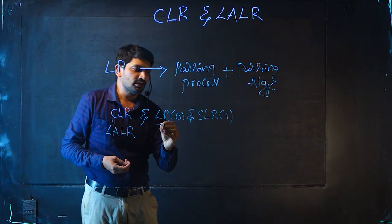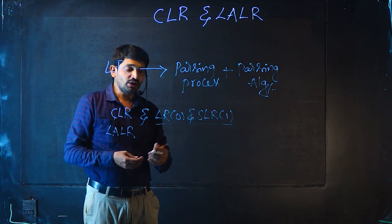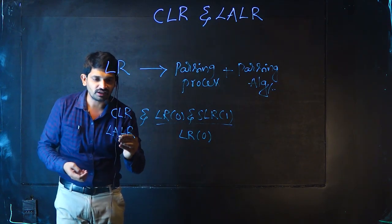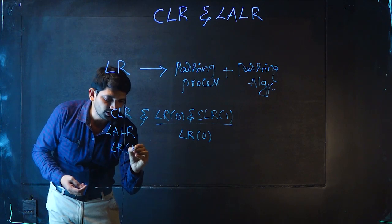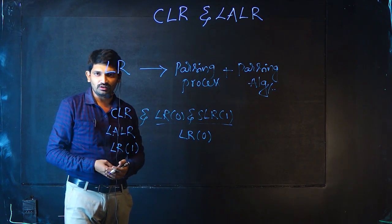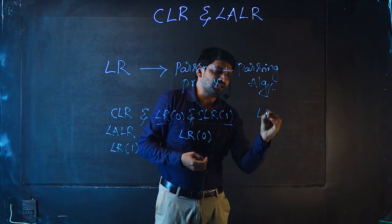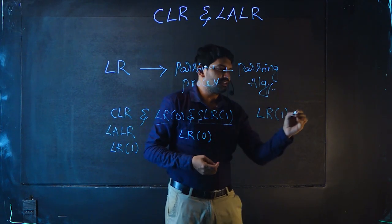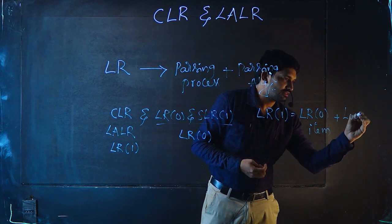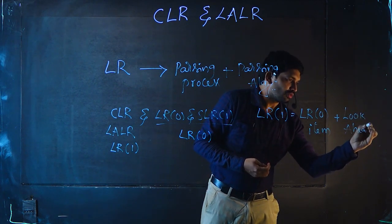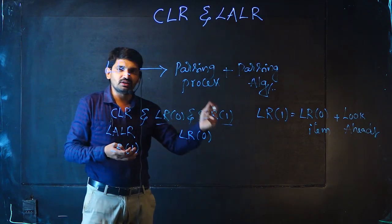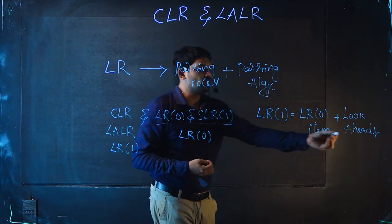To construct LR 0 and SLR 1 parsing, we use LR 0 canonical items. But to construct CLR 1 and LALR, we need LR 1 canonical items. The LR 1 item equals LR 0 item plus lookaheads. The purpose of lookaheads is that we perform the reduction operation or place it in the parsing table depending on these lookaheads only. In LR 0, there are no lookaheads.